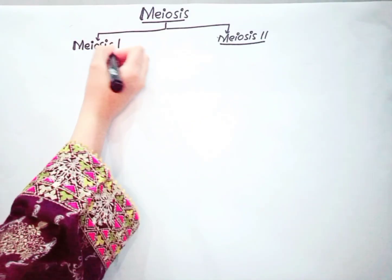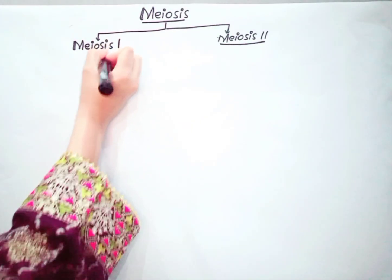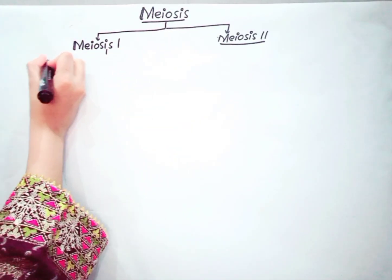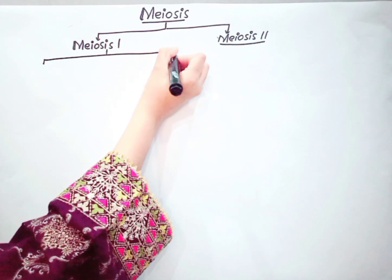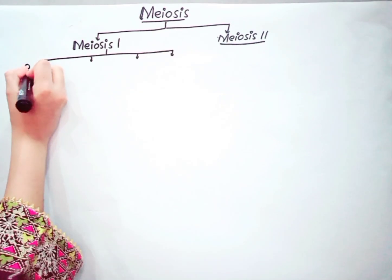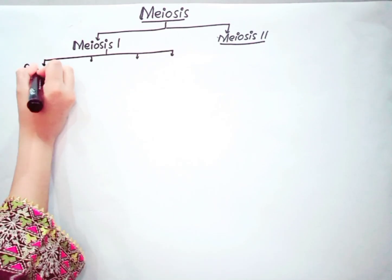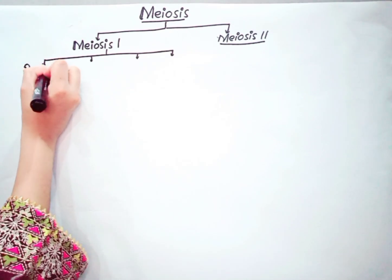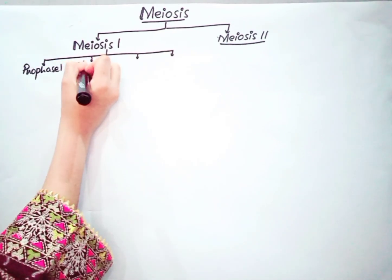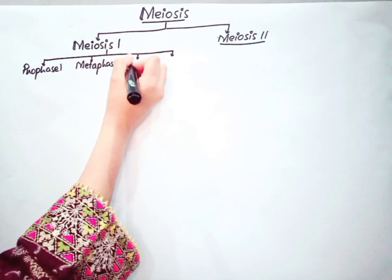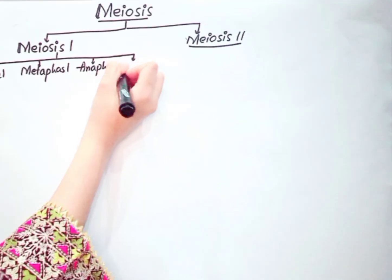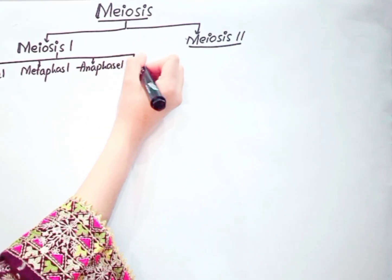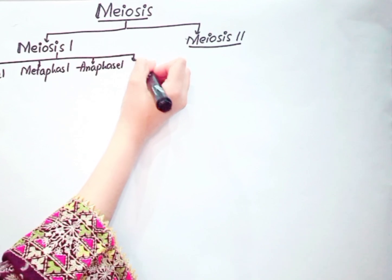Meiosis 1 is further divided into four sub-stages: prophase 1, metaphase 1, anaphase 1, and telophase 1.